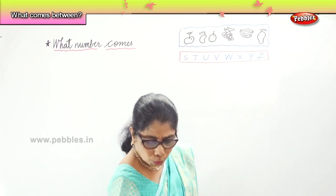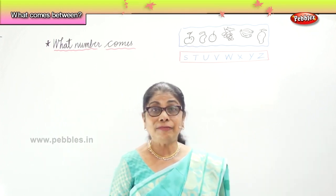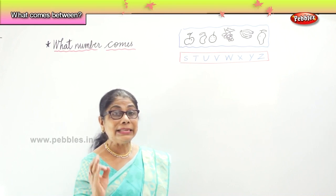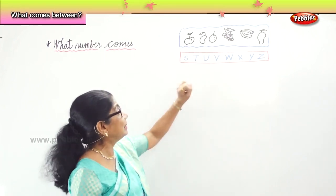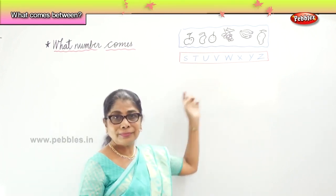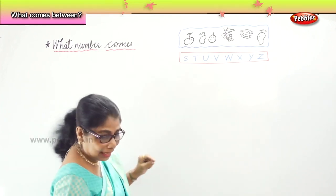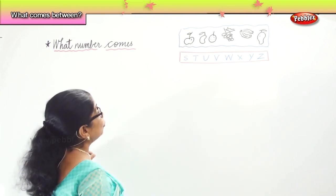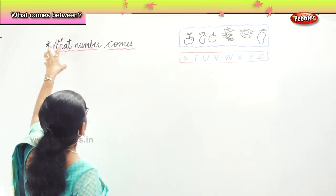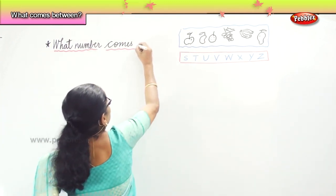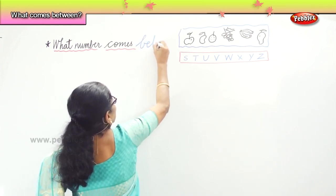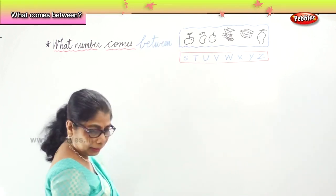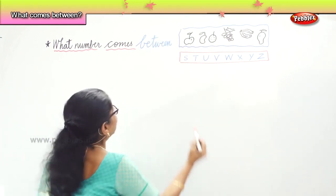Now look at the fruits and look at the alphabets. I am going to ask you a question. What letter is between S and U? Between. So you will say T. We are going to learn today to write what number comes between.